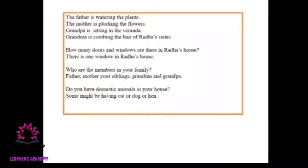So how many doors and windows are there in Rada's house? Can you count? Look at the picture — there is one window in Rada's house. Who are the members in your family? Maybe father, mother, your siblings — your brother, your sister — and some of you might have grandpa and grandma. Do you have domestic animals? Some might have a cat, dog, or hen. Most of us like dogs, and some like a pet cat.